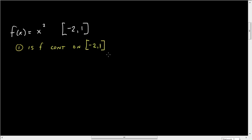is f continuous on [-2, 1]? Well, f is a polynomial, all polynomials are continuous on the infinite interval, negative infinity to positive infinity. So that means yes.